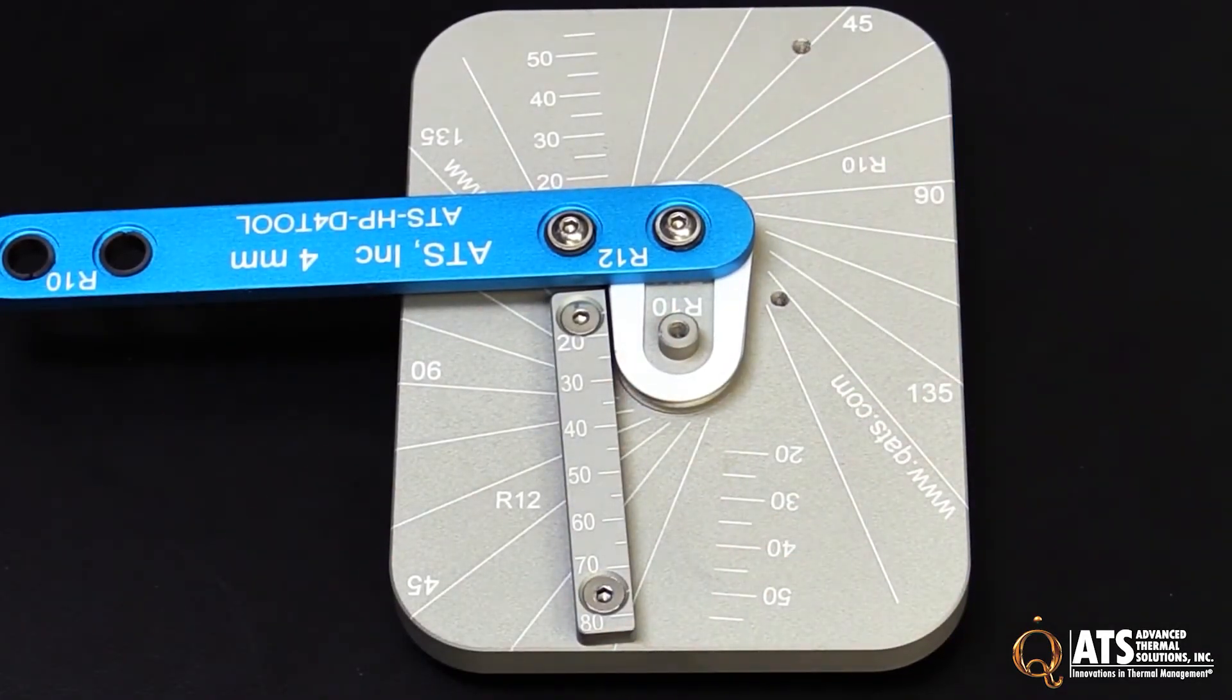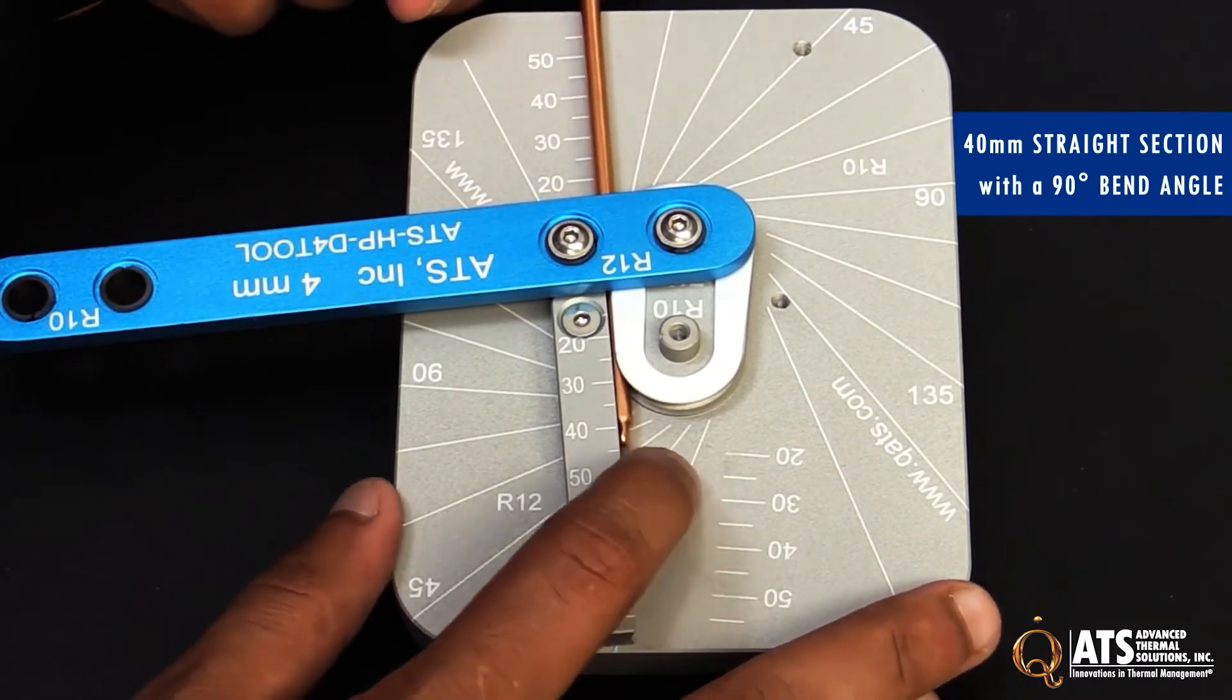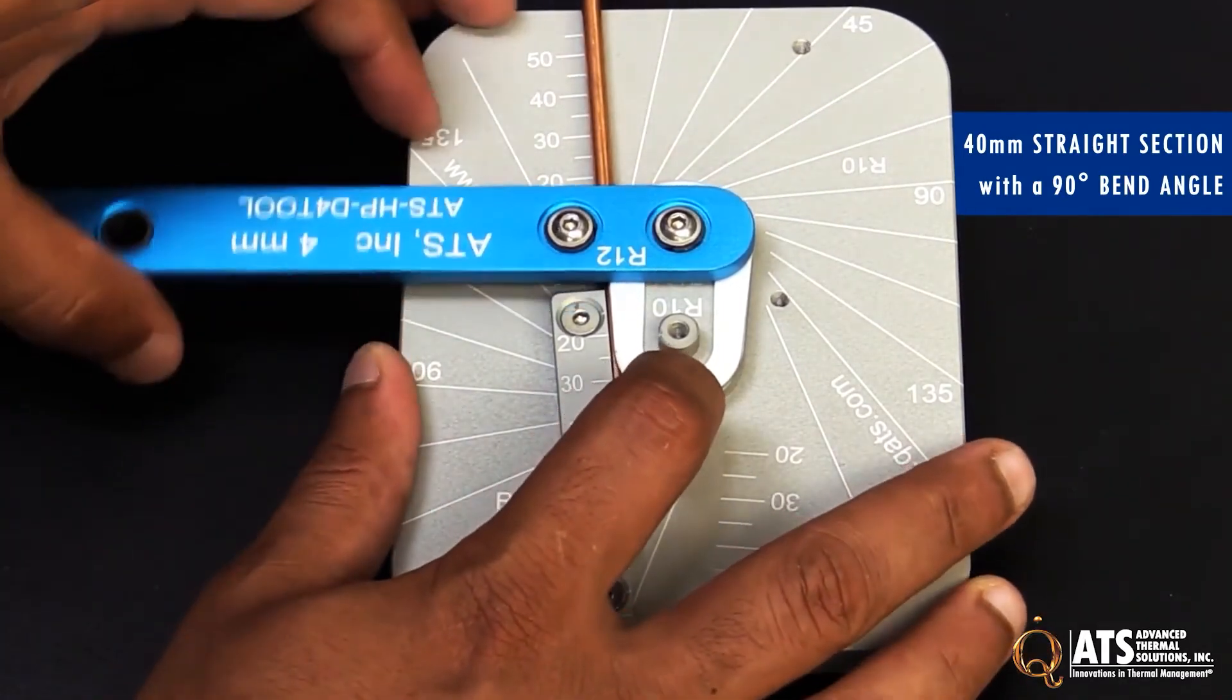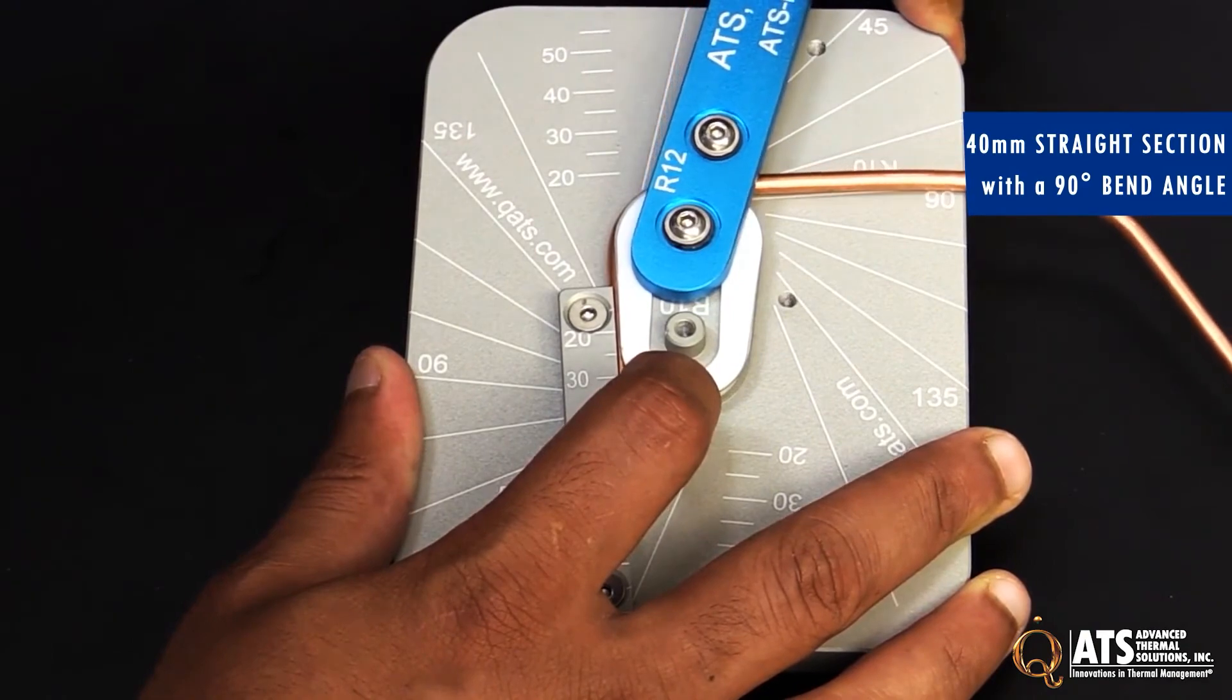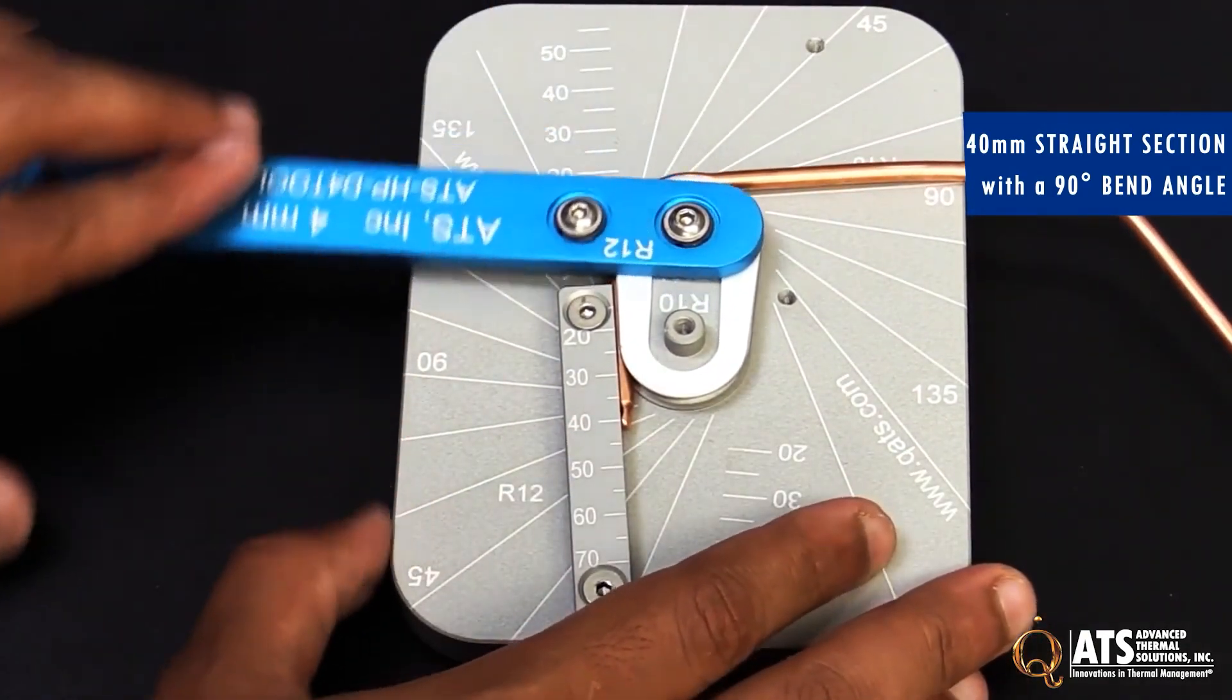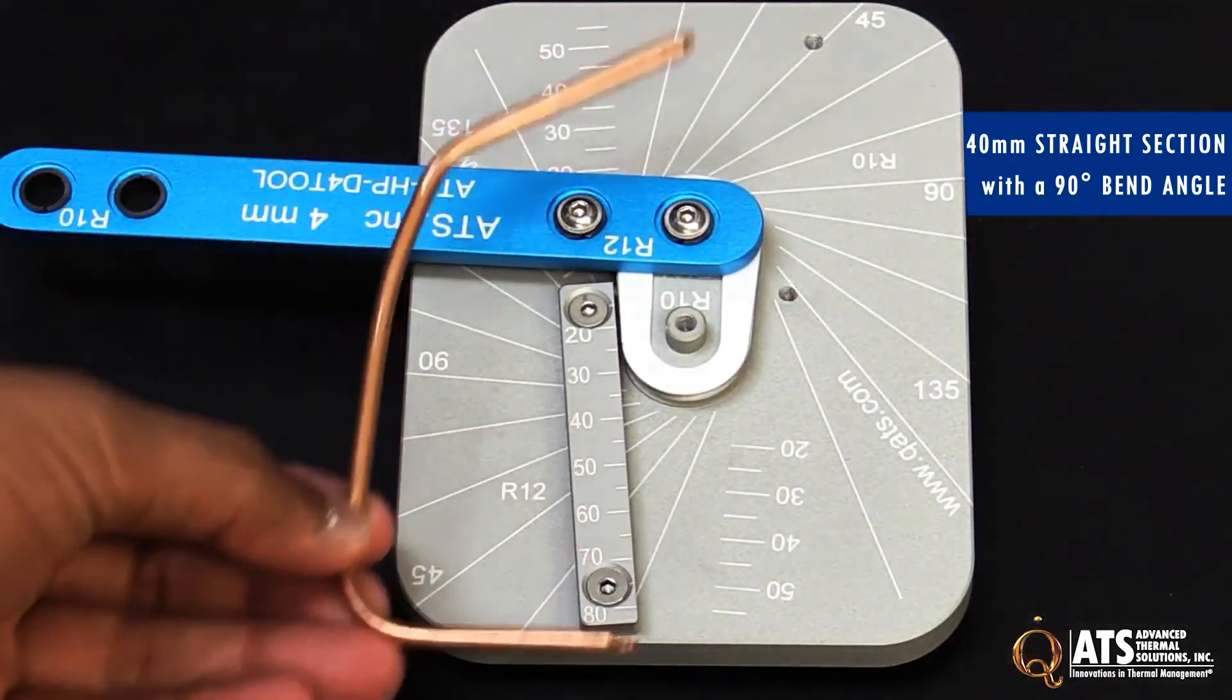Let's say for example you wanted another bend of 90 degrees. You can feed it from the other end. Let's say I want a 40 millimeter length. I rotate the handle until it gets to 90 degrees, rotate back, and pull the heat pipe out.